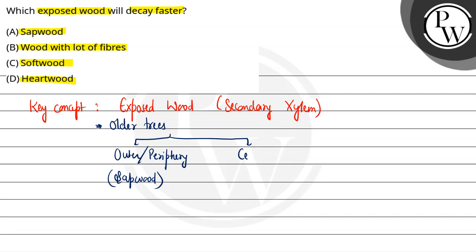And the central part is called duramen, or heartwood.